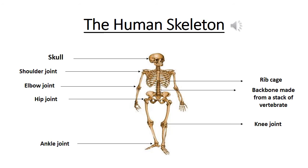Bones of the spine or backbone: the spine supports the head, the chest and the structure that carries the arm. It is made up of small bones called vertebrae. The spine all together is called the spinal cord. It is not straight but has curves that help to support the body and help the person to move and bend.